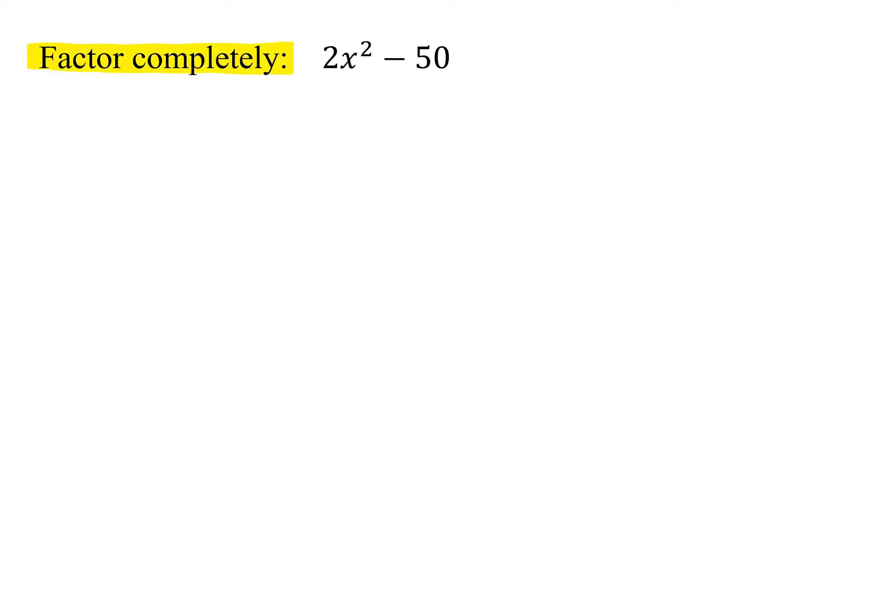In this problem, we're asked to factor completely 2x squared minus 50. How many terms do I have in this? Notice there are only two terms.